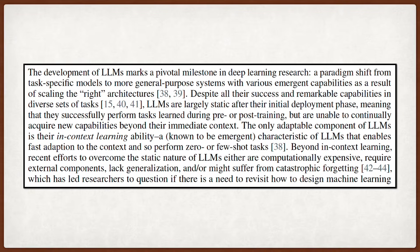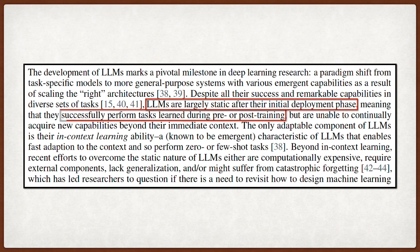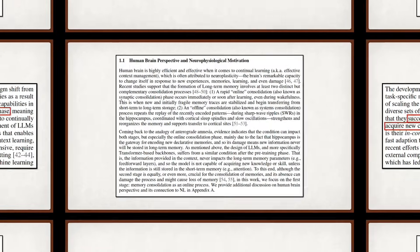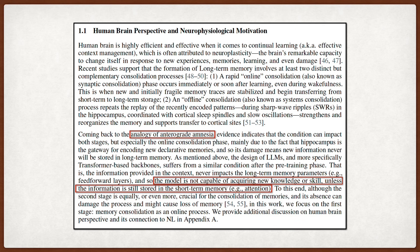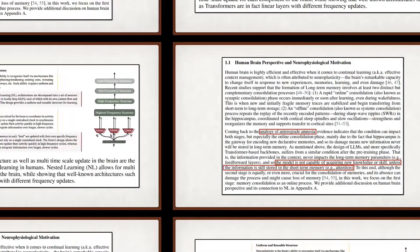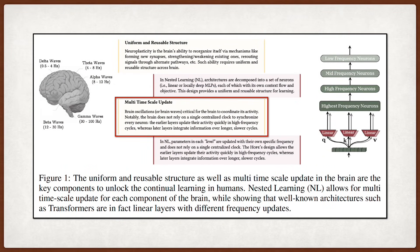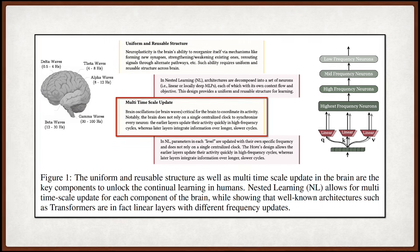The motivation stems from a major challenge: large language models are essentially static after pre-training, only retaining adaptability via their known emergent in-context learning ability. The authors draw a strong analogy to anterograde amnesia, arguing that large language models struggle to form new long-term memories rapidly, limiting their knowledge to the immediate context window or the long-past knowledge stored during pre-training. Nested Learning is proposed as a path to enable multi-timescale updates for each model component, echoing the uniform and reusable structures observed in the brain that facilitate continual learning.